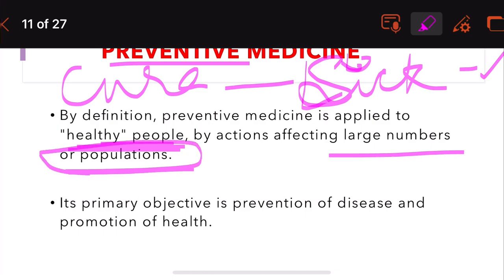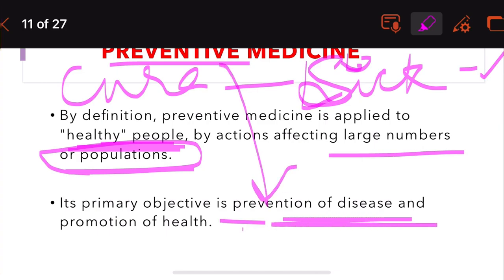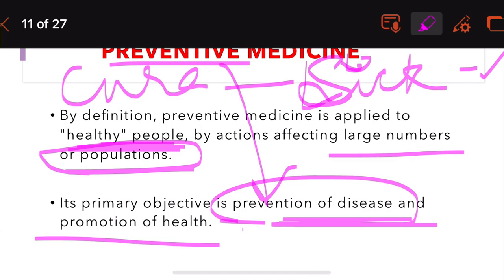The primary objective of preventive medicine is prevention of disease and also promoting the health of an individual. We can prevent disease by giving drugs, vaccines, by proper diet and nutrition, and by diagnosing and screening cases. Let us understand in detail how we prevent disease and how we promote health in people.